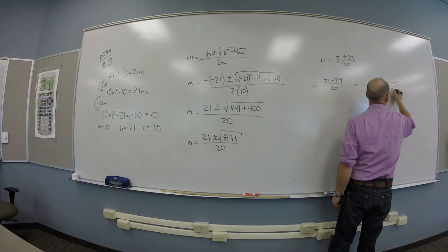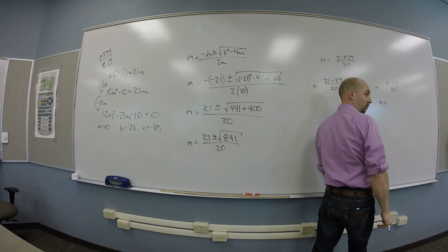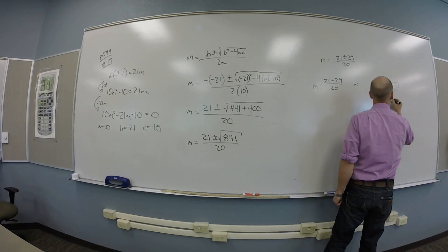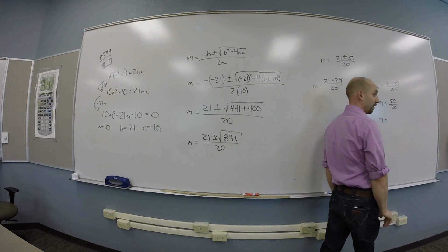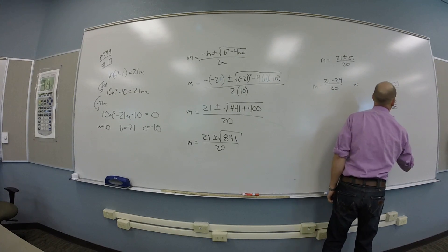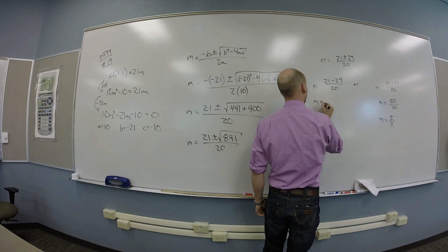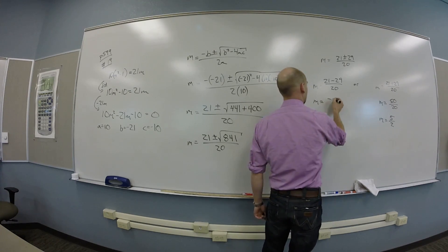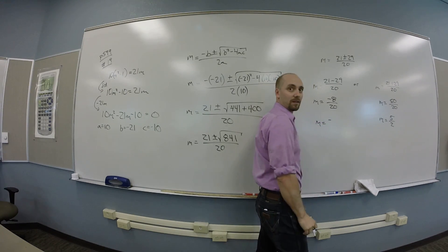Is? 21 minus 29 over 20. Is? So this one's actually convenient. What's 21 plus 29? 50. So that reduces to 5 halves. And this guy gives you m is? Negative 8 over 20. Negative 8 over 20 which reduces to? 2 over 5.